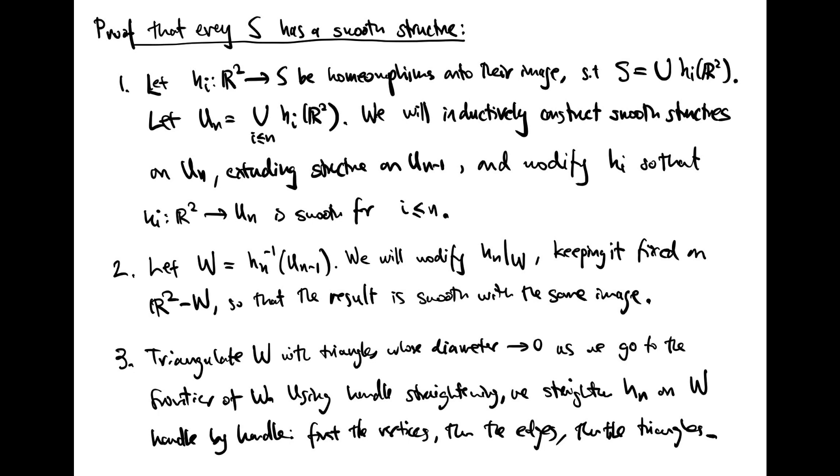Triangulate W with triangles whose diameter goes to zero as we head out to the frontier of W. Now we use handle straightening in the following manner. We straighten the map H_N on the triangles of W, handle by handle, first in a neighborhood of the vertices, then in a neighborhood of the edges, and finally we extend it over each of the triangles. The resulting map is smooth on all of W, so that the smooth structure that H_N pushes from R² onto S agrees with the smooth structure on U_(N-1) and extends it to U_N. This is the induction step and includes the proof that every surface S has a smooth structure.